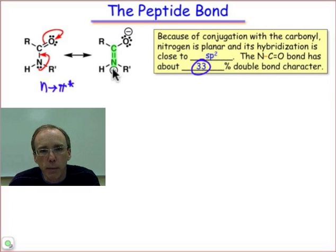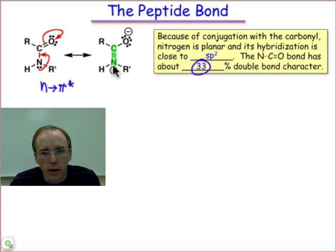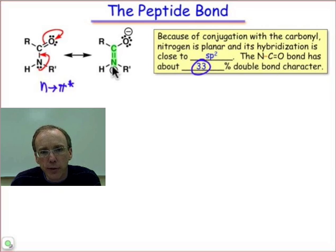— to the main linking bond in the peptide chain. That carbon-nitrogen bond that joins the carbonyl of one group and the amino group of an adjacent amino acid is going to have significant double bond character.